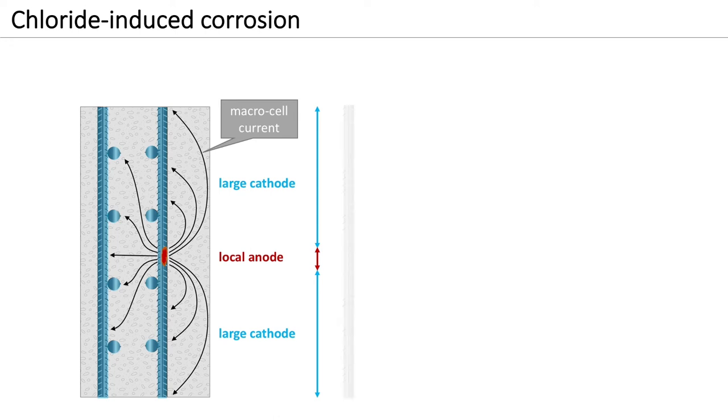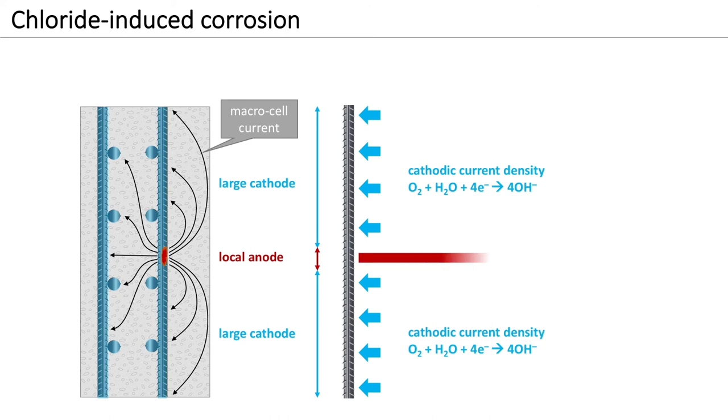As we saw in video 2, in corrosion, the total anodic current equals the total cathodic current. Therefore, the area ratio between a large cathode and a small anode means that high local anodic current densities can occur. Remember that current density is the current divided by the electrode area on which the reaction occurs. In practice, these high anodic current densities mean high local rates of metal losses.